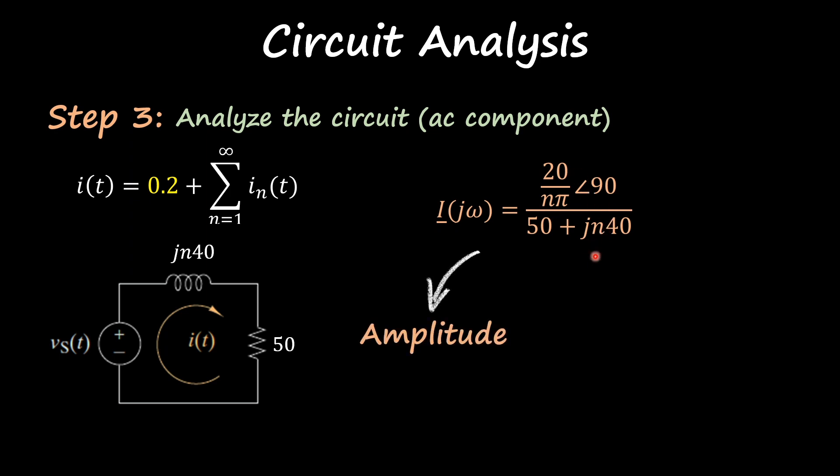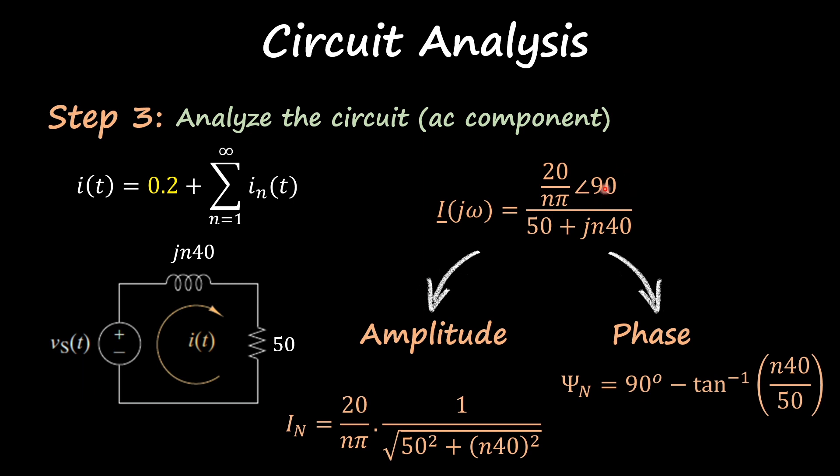I find an amplitude which is this one, it's already in polar form, so I do this amplitude divided by the amplitude of my denominator complex number, which is this one. And the phase, because I'm dividing two complex numbers, I just do the subtraction of the phases, so 90 minus the phase of this complex number.